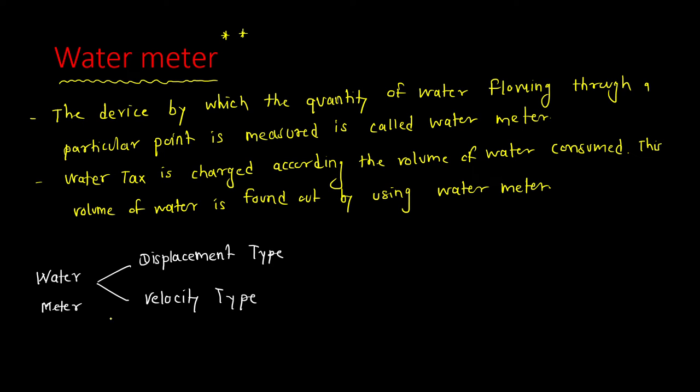We don't have to do much PhD in this. Just remember what is the meaning of water meter, what are the two main categories, and where each is used. The displacement type is used for measuring the flow in residential houses.